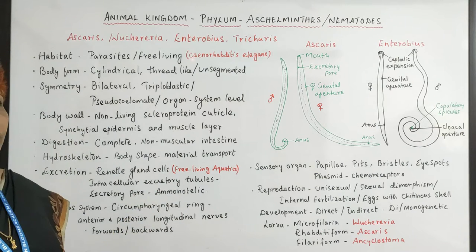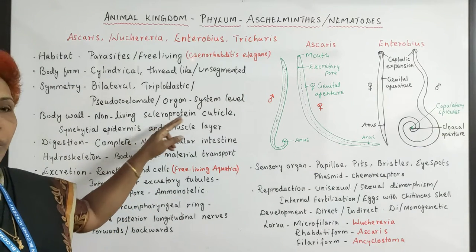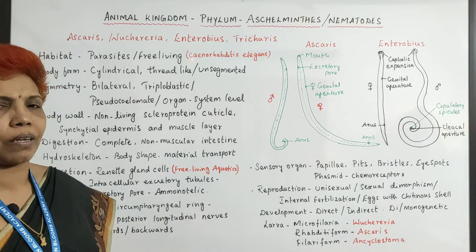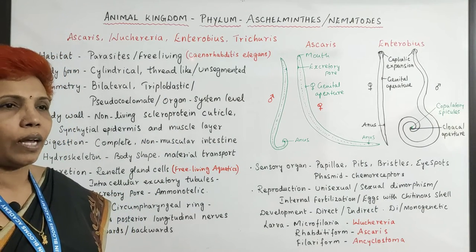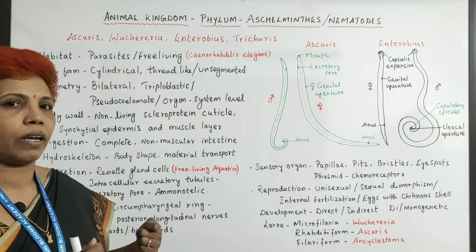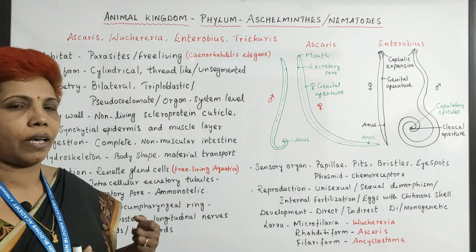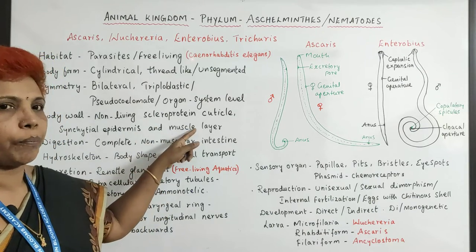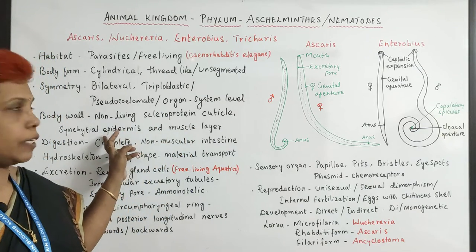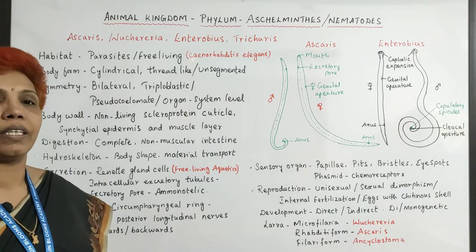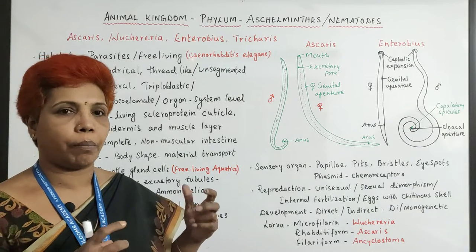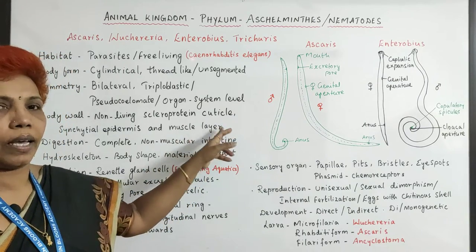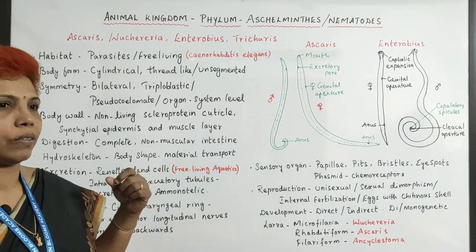The body wall is a non-living scleroprotein cuticle. They are mostly parasitic forms and don't have a very thick exoskeleton like a calcareous shell, but the cuticle has some thickness with scleroprotein. They also have a syncytial epidermis — syncytial meaning a multinucleate cell condition — and muscular layers are present for movement.